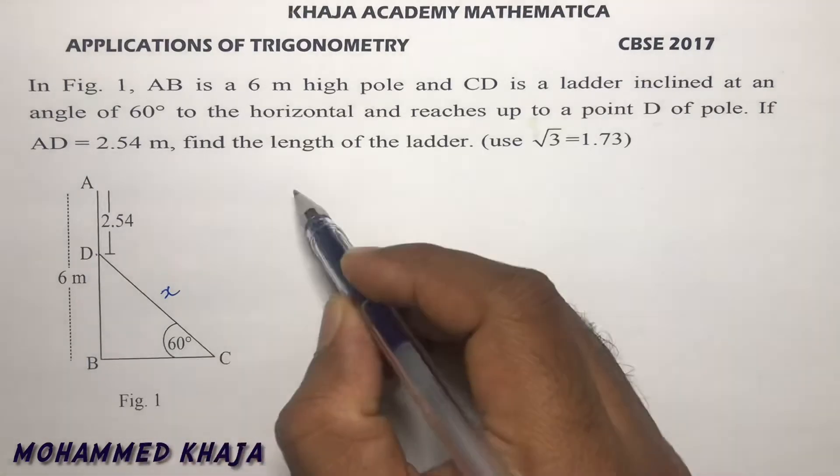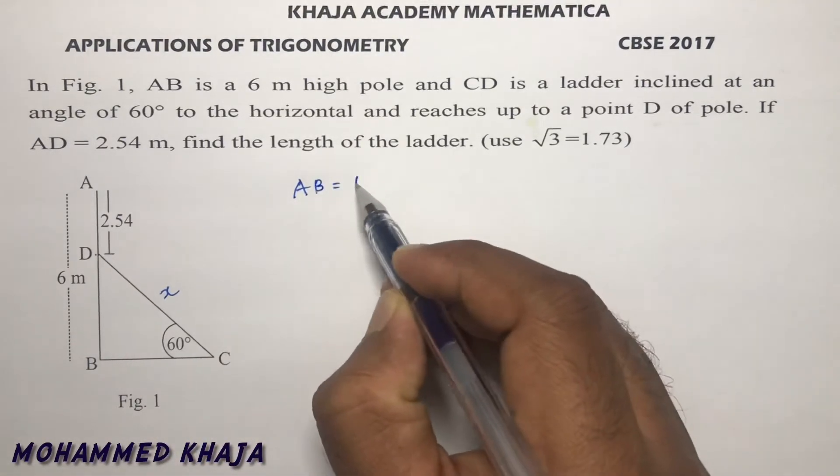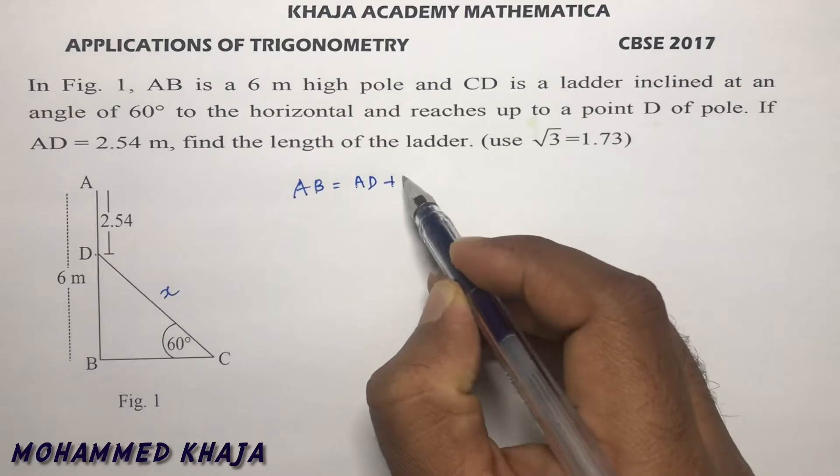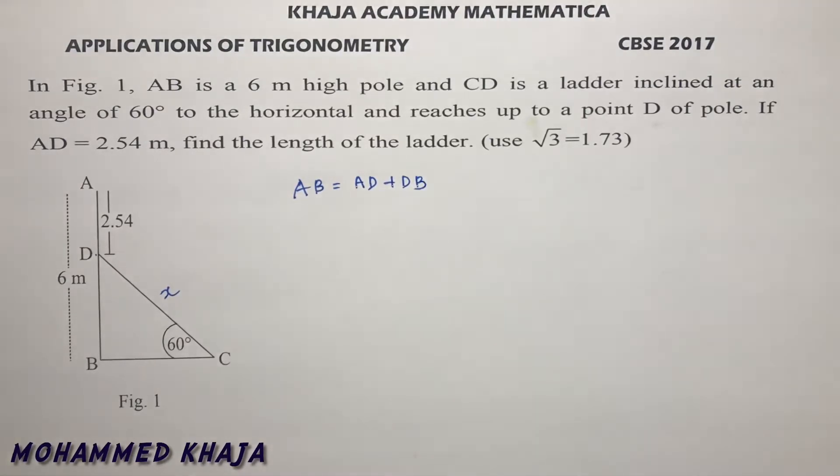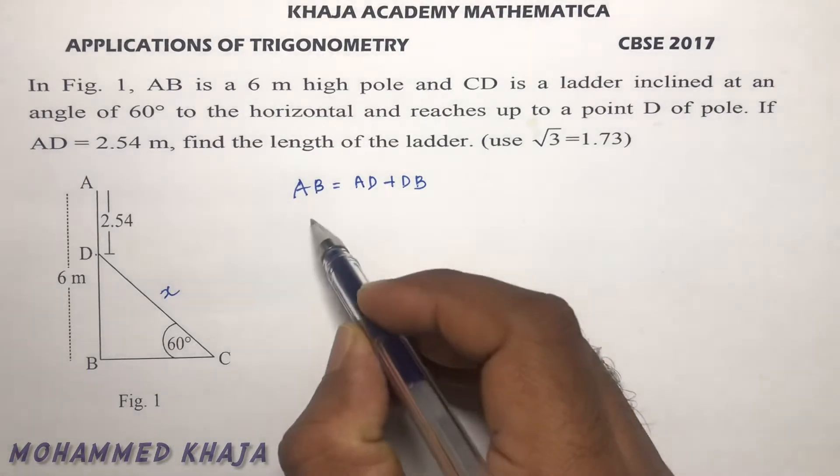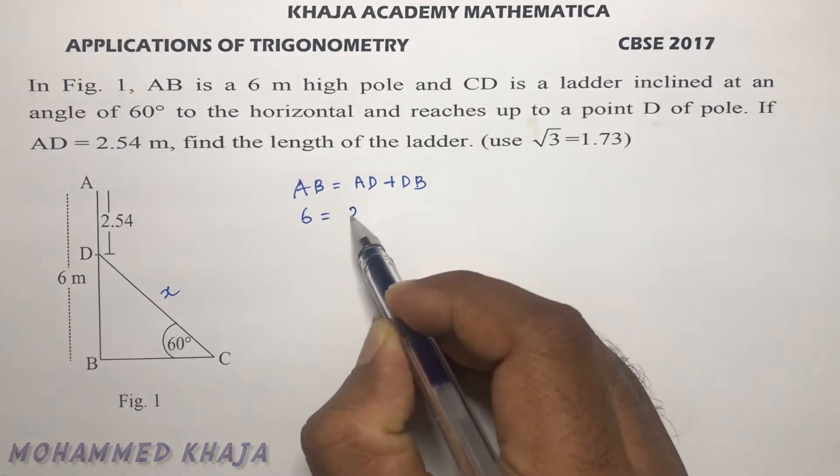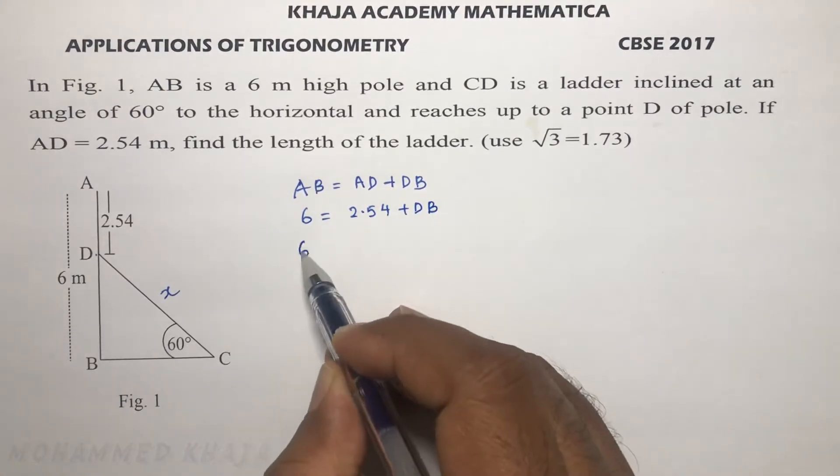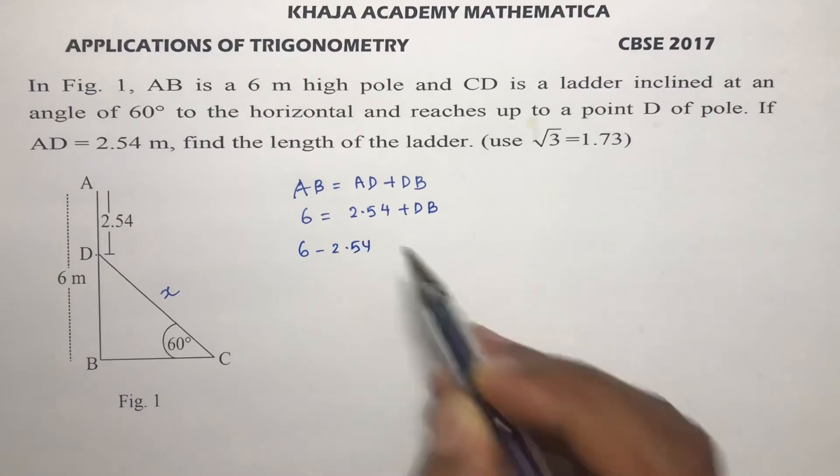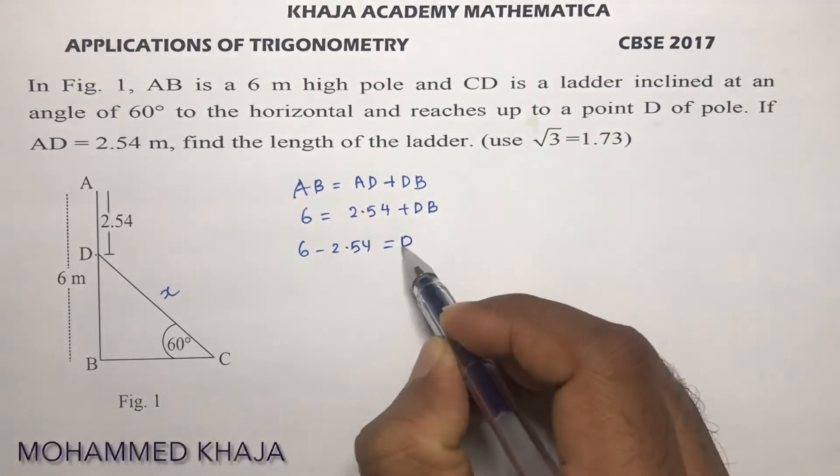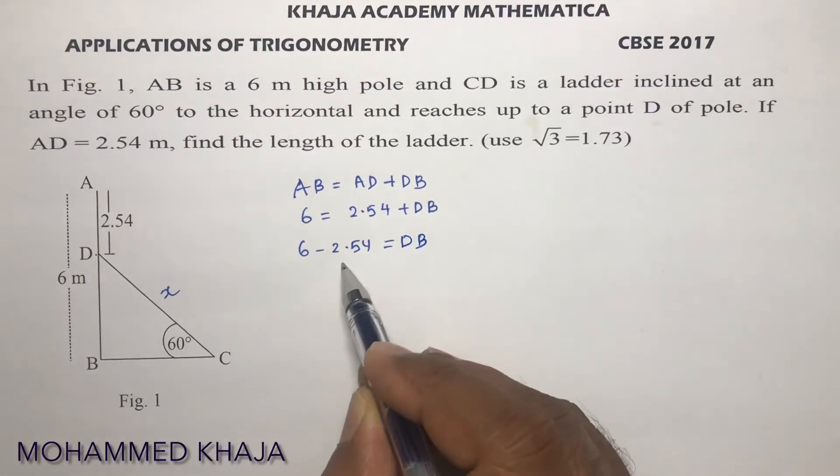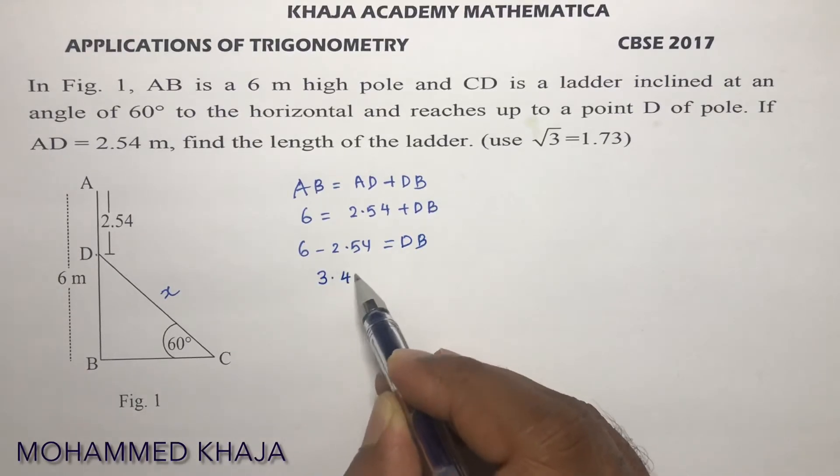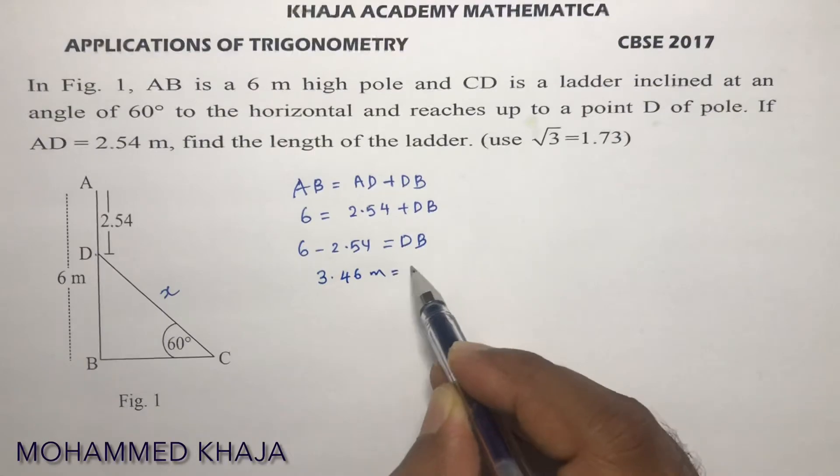Now, see in the diagram AB is AD plus DB. AB is here 6 meters, AD is 2.54, so DB equals 6 minus 2.54, which equals 3.46 meters.